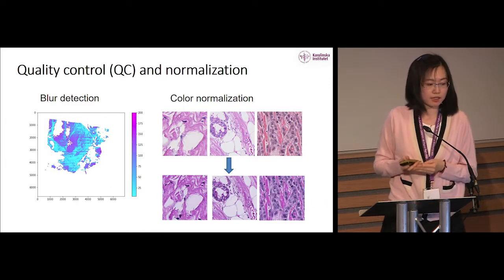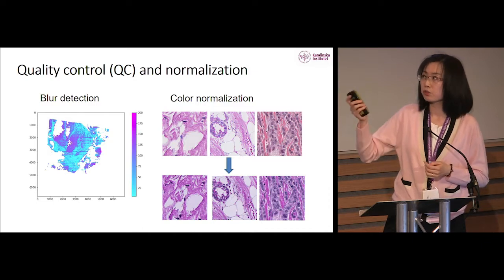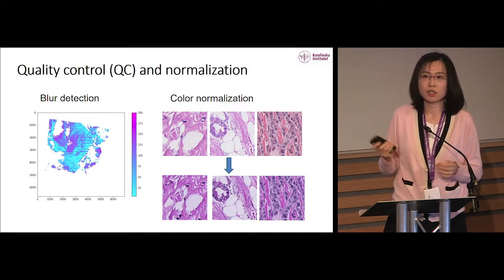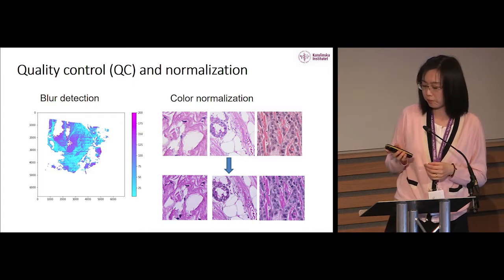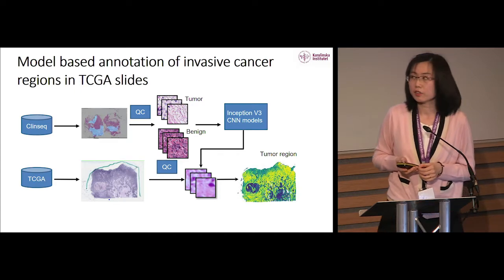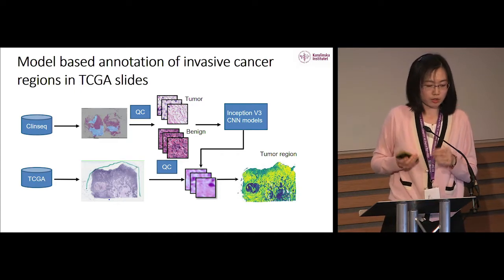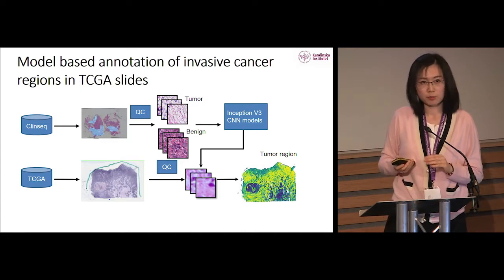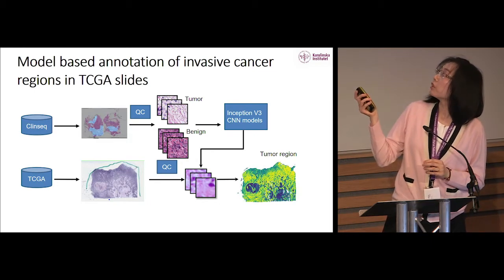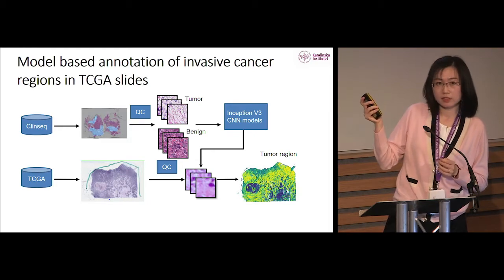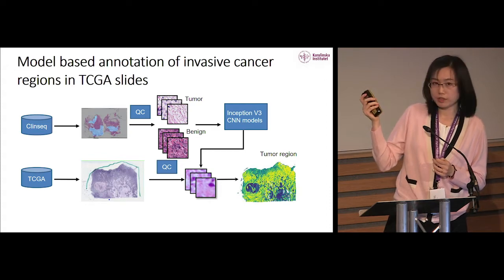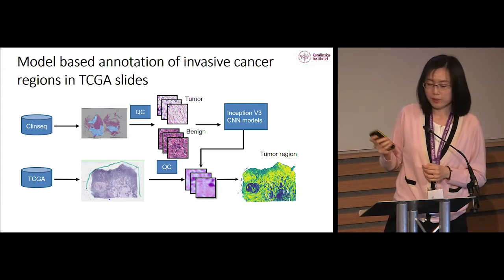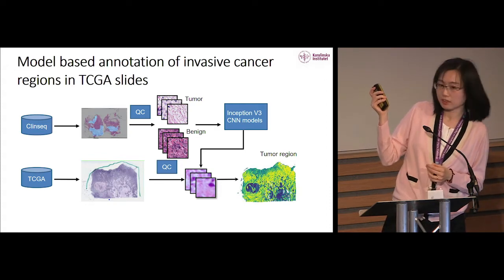We apply blur detection and color normalization to control tile quality and reduce stain variation between slides. For the TCGA data, where most slides lack annotations, we took tumor and benign image patches from ClinSec to train an Inception V3 model to predict cancer regions on the TCGA data, and we visualize results using heat maps.